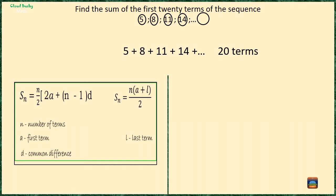So for this example we are going to use the first formula: Sn equals n/2 times [2 times the first term plus (the number of terms to be added minus 1) times the common difference].